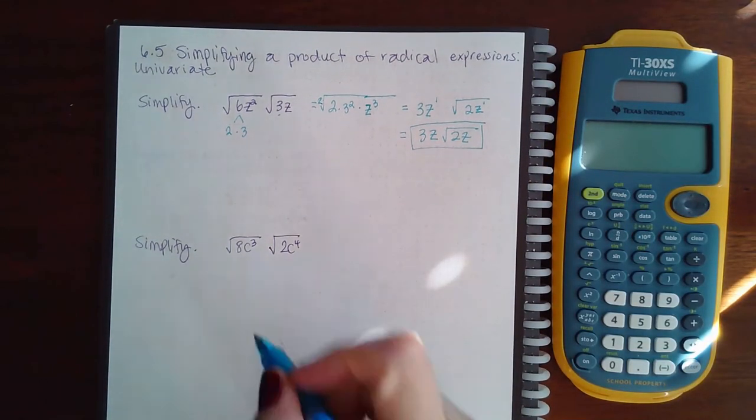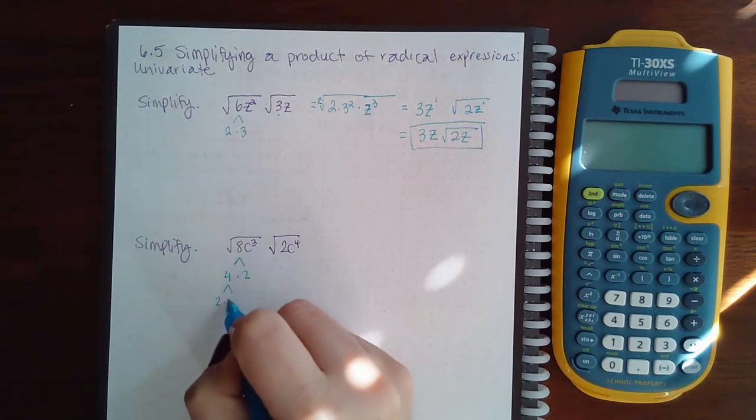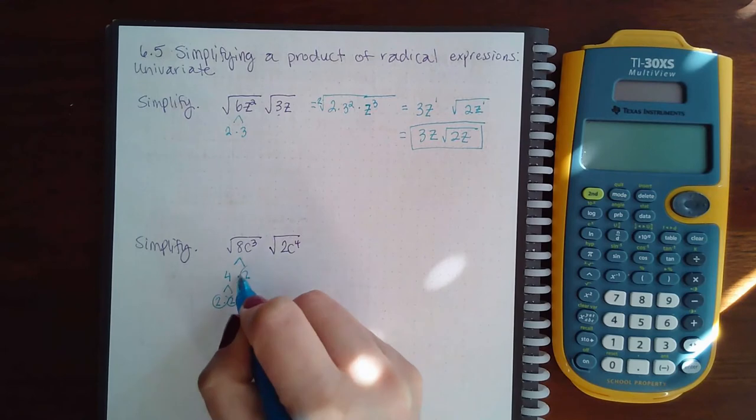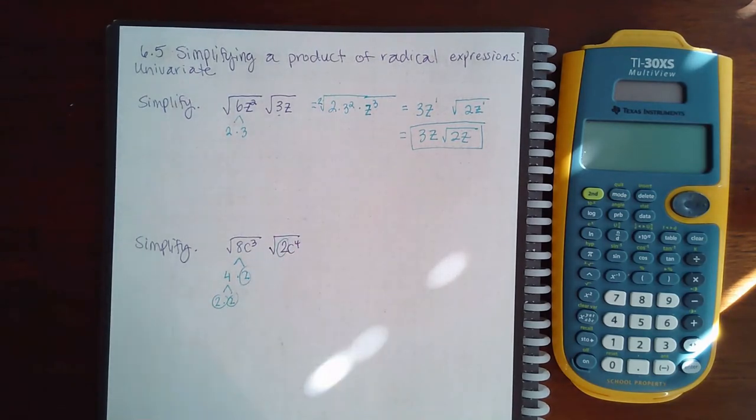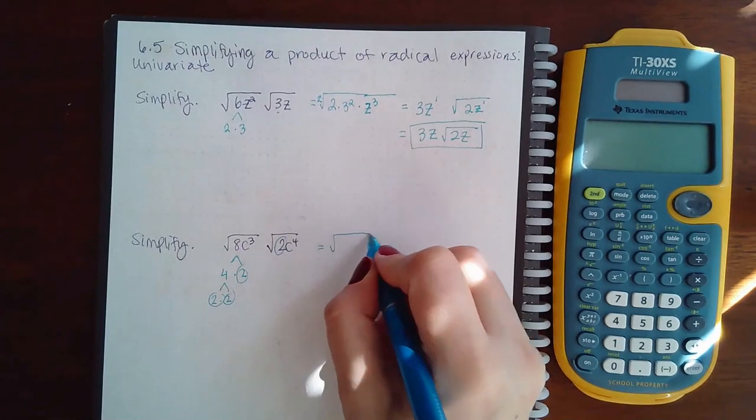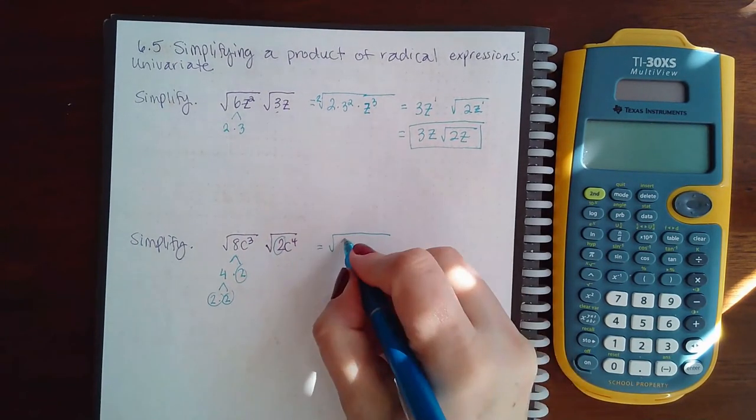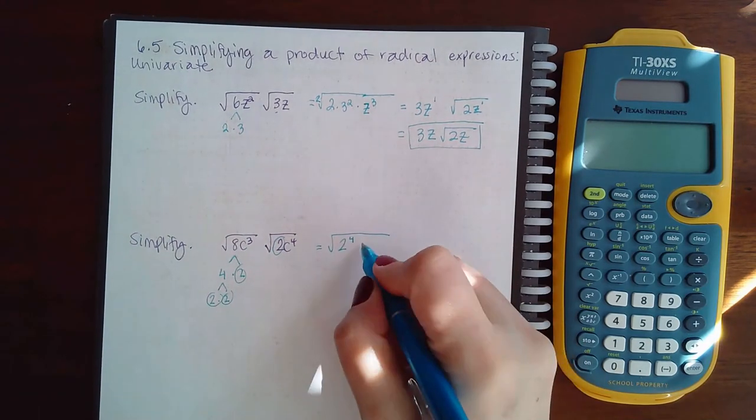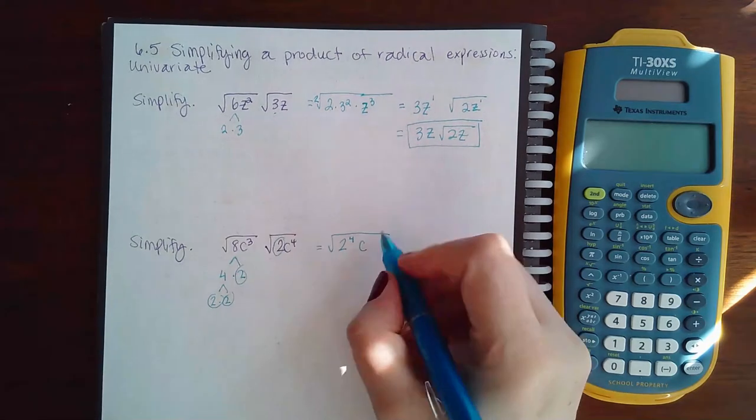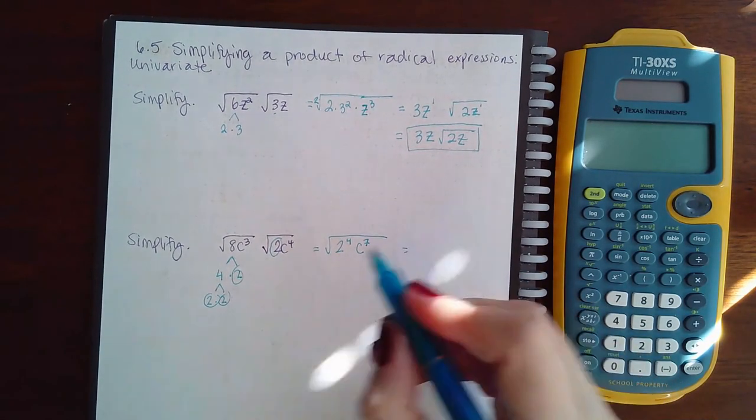Let's try that again with this one. Now 8 can be written as 4 times 2 or 2 times 2, so these are all of my primes in this square root. If I write that in prime factorization, that means there's 1, 2, 3, 4 twos, so 2 to the 4th power. Then if I multiply my c's together, 3 and 4 are going to get added and I get c to the 7th.